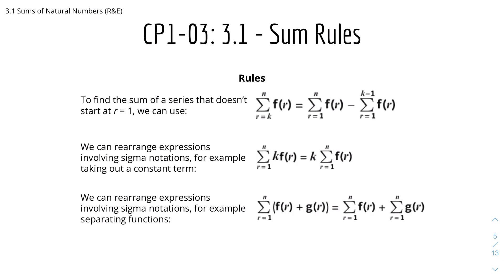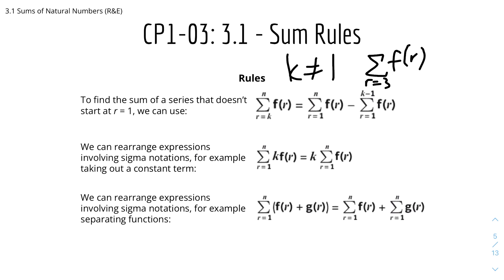Here we have more sum rules. To find the sum of a series that doesn't start at r equals 1, we use the formula: the sum of f(r) from r equals k to n equals the sum of f(r) from r=1 to n, minus the sum of f(r) from r=1 to k−1. It's important that it's k minus 1. So for example, the sum of f(r) from r=3 to 9 equals the sum from r=1 to 9, minus the sum from r=1 to 2. We can also rearrange expressions involving sigma notation — for example, taking out a constant term: the sum of k·f(r) from r=1 to n equals k times the sum of f(r) from r=1 to n.